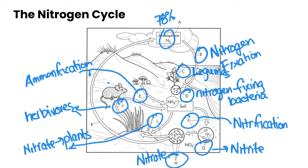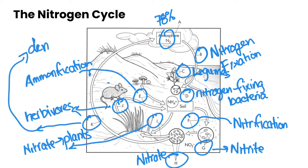Now we need to talk about how nitrogen returns to the atmosphere. This is through label K, through a process called denitrification. This is performed by a variety of bacteria, fungi, and other organisms, and essentially it does the reverse — it takes nitrates that are in the soil, breaks them down, and releases that pure elemental nitrogen back into the atmosphere.